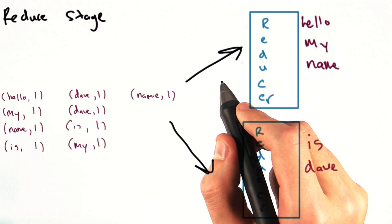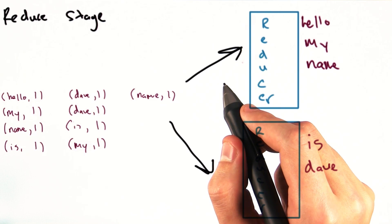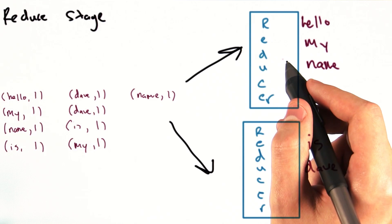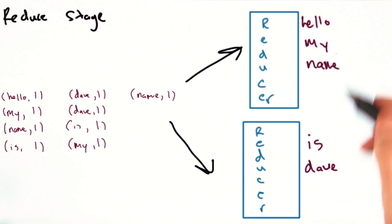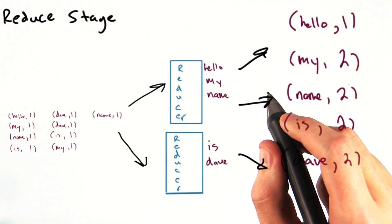So if we ran the job with just one reducer, that reducer would process all the keys. But if we ran the job with two reducers, one reducer might process half the keys while the other reducer processes the other half. So let's go back to our word count example.